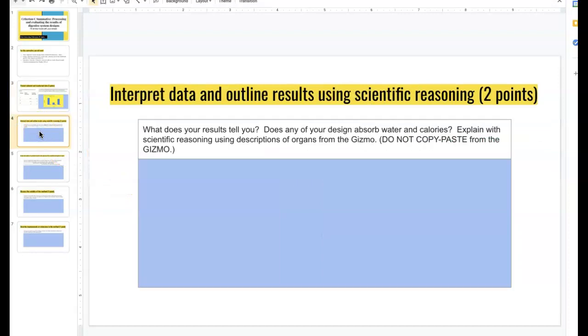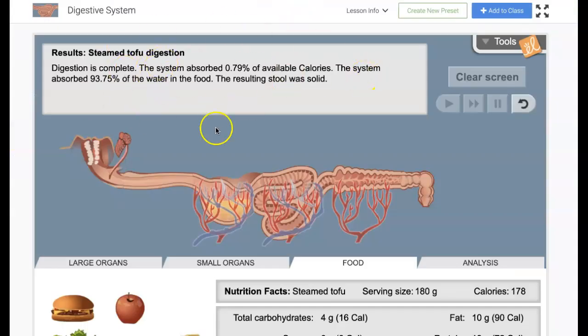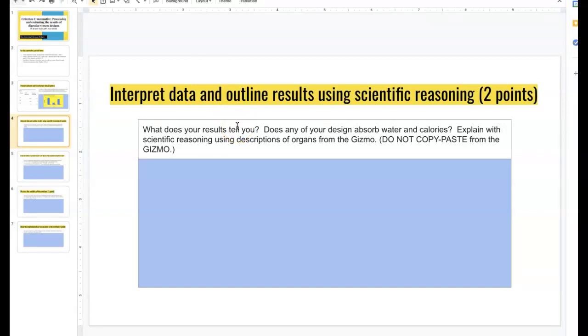Let's go to the next one. What does your results tell you? Does any of your design absorb water and calories? Explain with scientific reasoning using descriptions of organs from the gizmo. This is where we practice during class on the Jamboard. It's a long explanation. You're telling me what did your design 1 absorb? How much water and calories did design 1, 2, and 3 absorb? Then tell me using the descriptions of the organs from the gizmo. This is where these things would help out as the food was going. It's going to be pretty long. That's the longest answer that you'll have. Use the class Jamboard to help you with some examples because your classmates were able to generate some acceptable answers. That's slide 4.